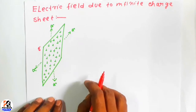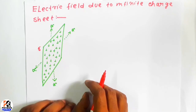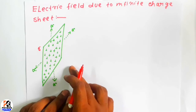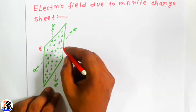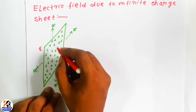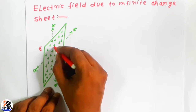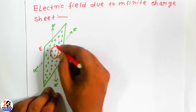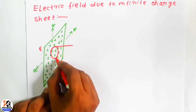To find the electric field at the front side at any place, we have to first consider a Gaussian surface. So I will use Gauss's law of electrostatics to find the electric field in front of an infinite plane sheet. I am taking a Gaussian surface here as a cylinder.